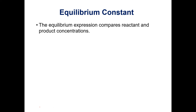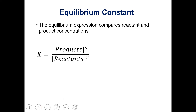We can write an equation for this, which we call an equilibrium constant. An equilibrium constant is an expression that compares the concentration of our reactants and the concentration of our products. We use a capital K to designate an equilibrium constant — be very careful with your case. Capital K is an equilibrium constant; little k is a rate constant. They are different things.